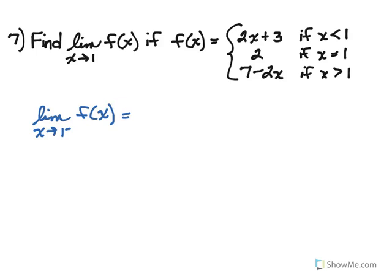If you're approaching one from the left, that means we're approaching one through values less than one. Think of a number line — you're coming through numbers such as 0.5, 0.6, 0.7, 0.8, 0.9, finally landing at one. So if you think about which of these pieces applies for those values, it's going to be the first piece. It's into that first piece that we substitute one in place of x, and that gives us five.